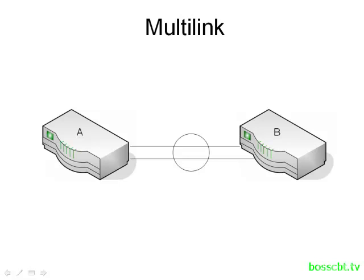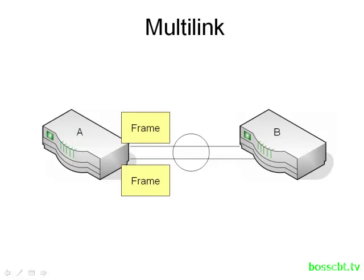That brings us to our second point about multi-link, and that is how it actually works. Let's say OSPF has decided that the best path to a destination is via the multi-link connection to router B. The way PPP multi-link works is it's going to take the layer 3 packet and divide it up into multiple equal-size frames. Then those frames are going to be equally distributed over all of the links in the bundle. We only have two links in our bundle and we're showing two frames here, but it could actually be many more than just two.